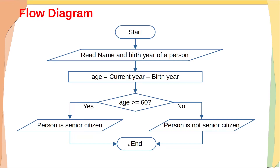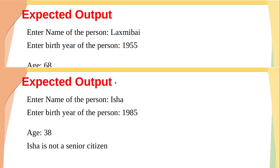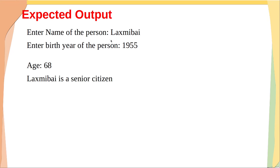The expected output: the program asks the user to enter the name of the person, then the birth year. It calculates age and displays whether the person is a senior citizen or not. For example, with the name Isha and birth year 1991, age is 32 — Isha is not a senior citizen. With name Laxmibai and birth year 1955, age is 68 — Laxmibai is a senior citizen.